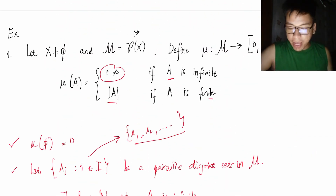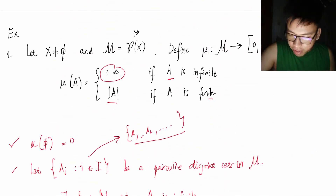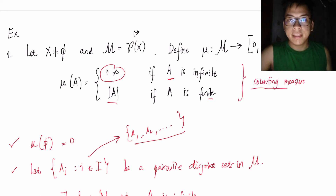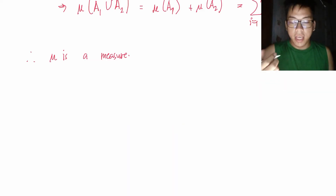We've arrived at the conclusion that our μ is indeed a measure. In fact, this is what we call the counting measure.